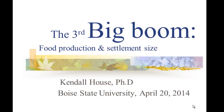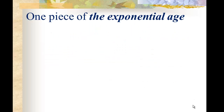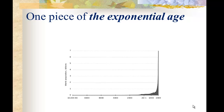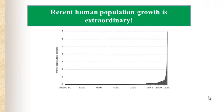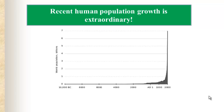This presentation is called 'The Third Big Boom: Food Production and Settlement Size.' This is one more piece of the exponential age — and one piece of that that we started with is the massive human population growth over the last two centuries: a fairly flat line, and then suddenly this remarkable acceleration in human numbers.